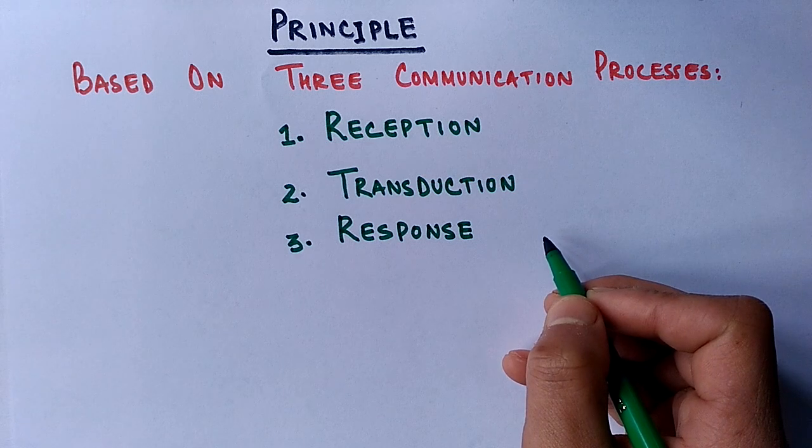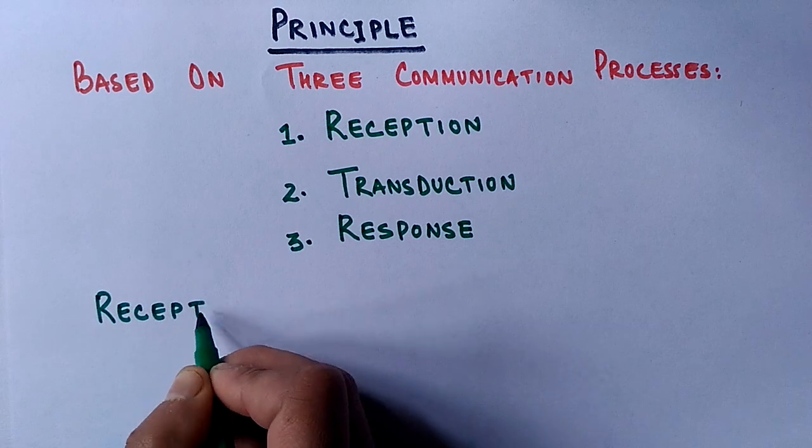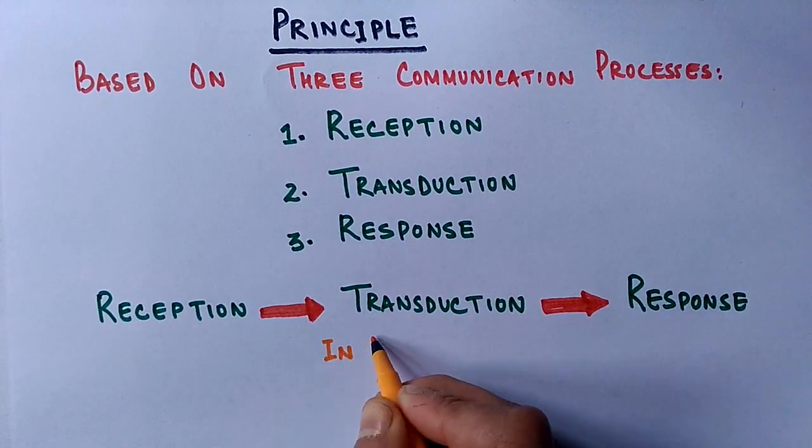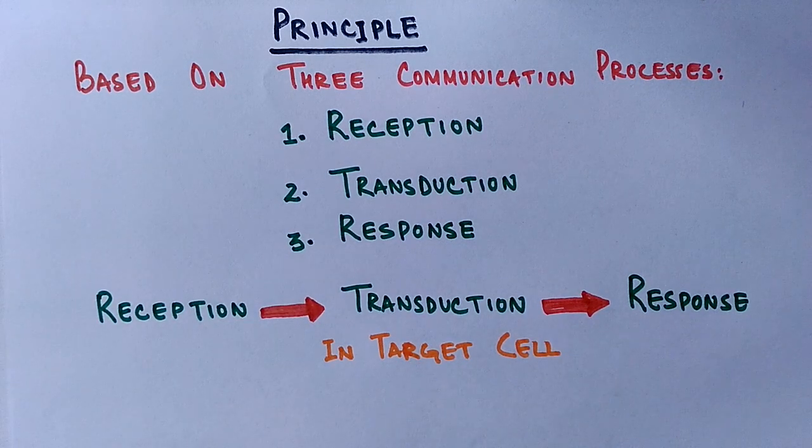The pathway of this communication process is reception, then transduction, and response, and it all occurs in a target cell but it's initiated by a signal producing cell.